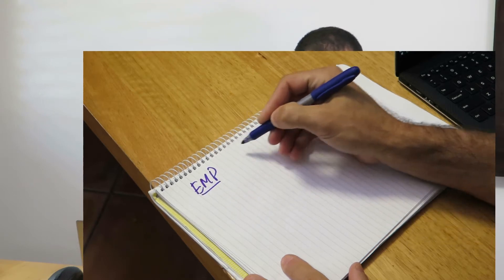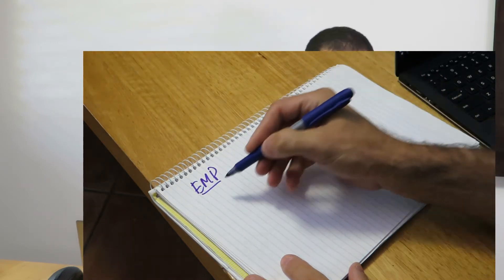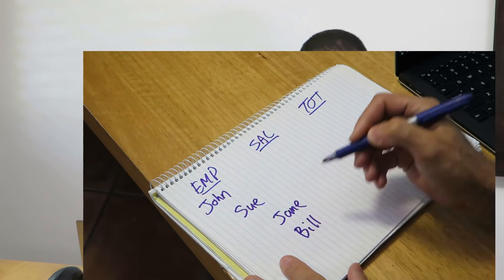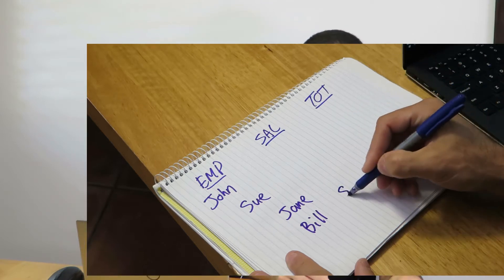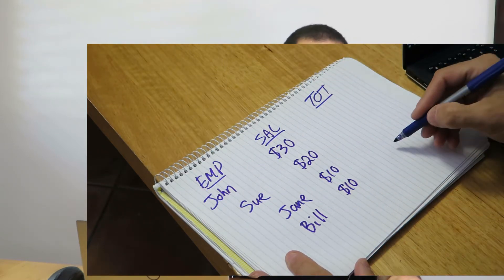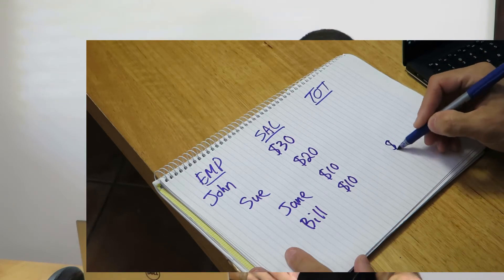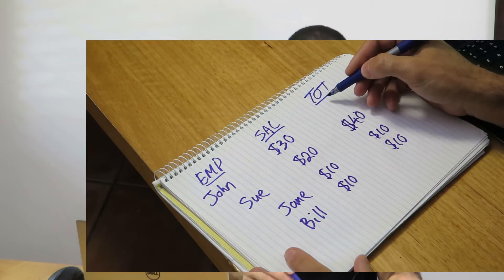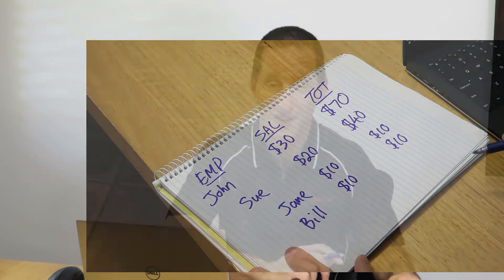We had an employee table with someone's salary, and we wanted to know what their running total was. So let's say we've got John — he's the top dog, the highest person in our organization. Sue reports to him, and underneath Sue we have Jane and Bill. Bill's salary is $10, Jane's is $10, Sue's is $20, and John's is $30 because he's the CEO. So what we want is a hierarchical total: Sue's total is her salary plus those underneath her, and John's total is effectively everyone in the entire organization. That's what we wanted to achieve — how could we do it with SQL and keep those totals up to date?